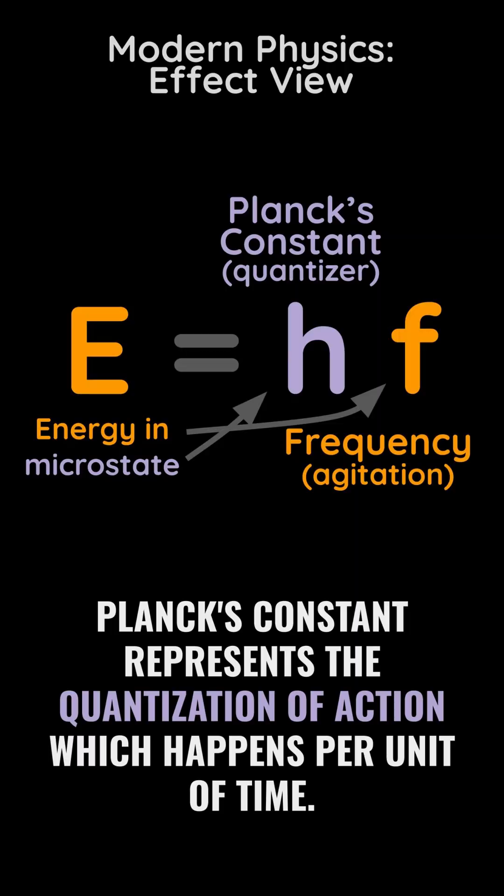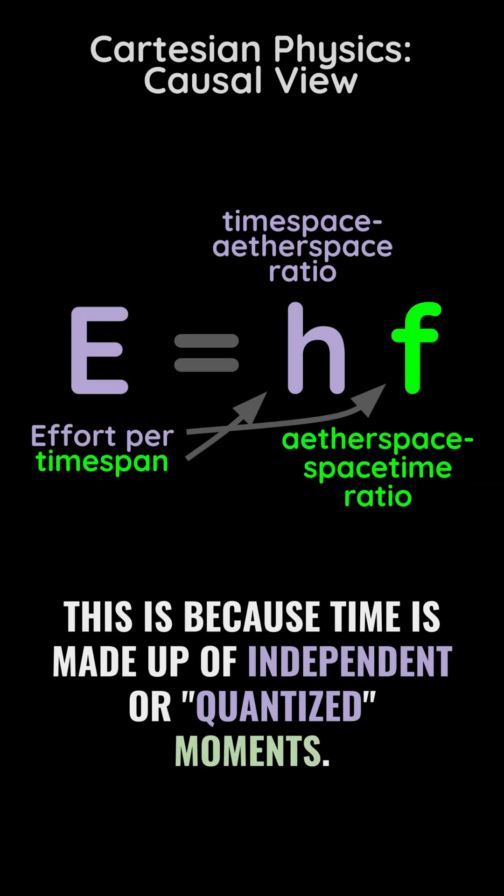In Cartesian physics, Planck's constant represents the quantization of action which happens per unit of time. This is because time is made up of independent or quantized moments.